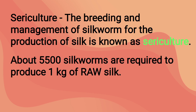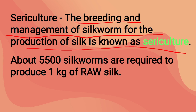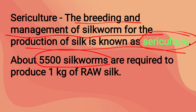Sericulture is the breeding and management of silkworms for the production of silk. When people grow large numbers of silkworms at an industry level for silk production, that process is known as sericulture. Notably, around 5,500 silkworms are required to produce just 1 kg of raw silk.